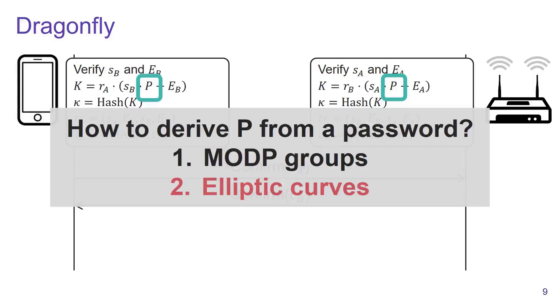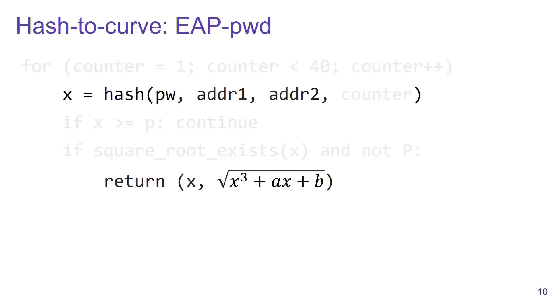This is generally done using a hash-to-curve function. One naive way to do this is to simply hash the password together with the MAC addresses of the client and access point, and use the resulting value as the x-coordinate of the point on the elliptic curve.